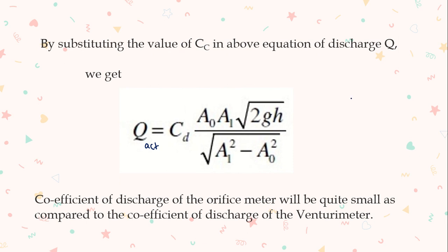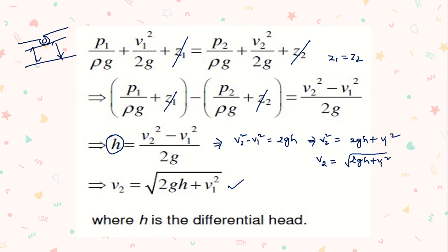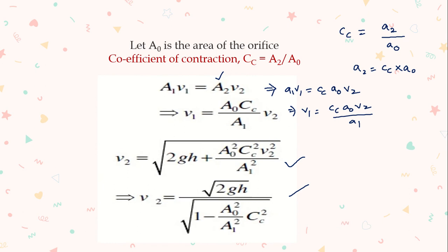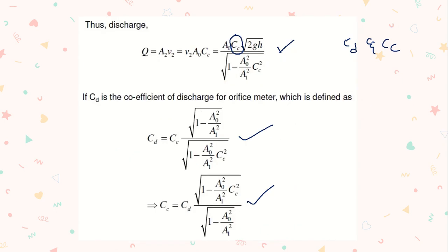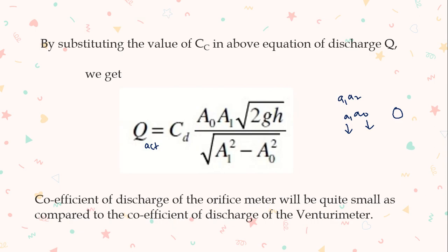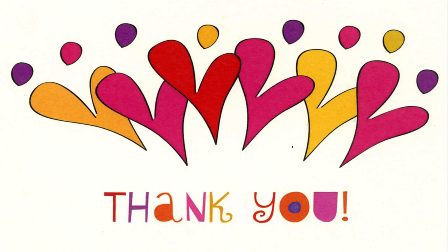Note that unlike the venturi meter formula where we write A1·A2, here we write A1·A0, where A1 is the area of the pipe and A0 is the area of the inner orifice. To summarize the derivation: first apply Bernoulli's equation at the two sections and find V2; second use the continuity equation to relate V1 and V2; third substitute the Cd–Cc relationship to arrive at the final discharge formula. This is how you calculate discharge through an orifice meter.